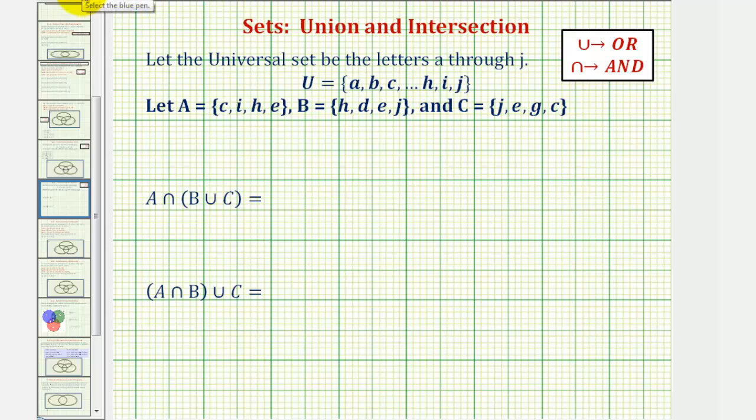So we'll begin by determining B union C. Because we have the union here, we're looking for the elements that are in set B or also in set C, which means we'll be combining the elements in B and C into one set.